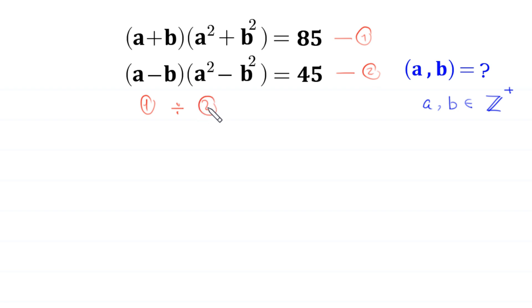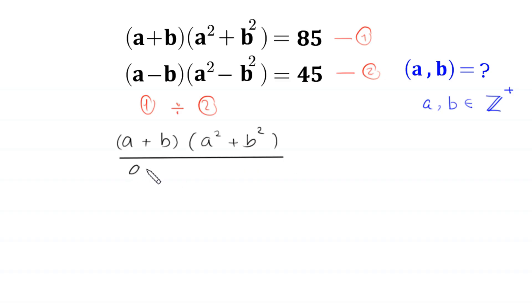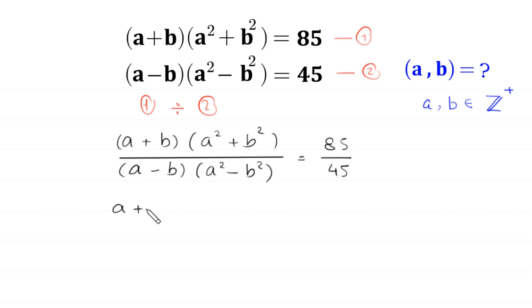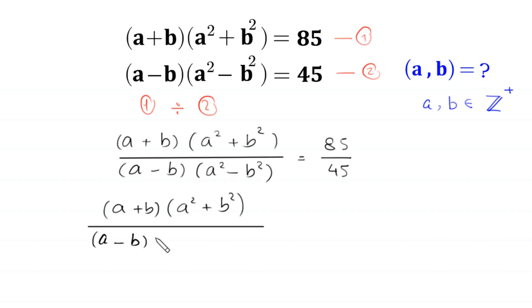We divide equation 1 by equation 2, giving us (a + b)(a² + b²) divided by (a - b)(a² - b²) equals 85 divided by 45. Note that a² - b² factors as (a + b)(a - b), so the right side simplifies to 17 over 9.